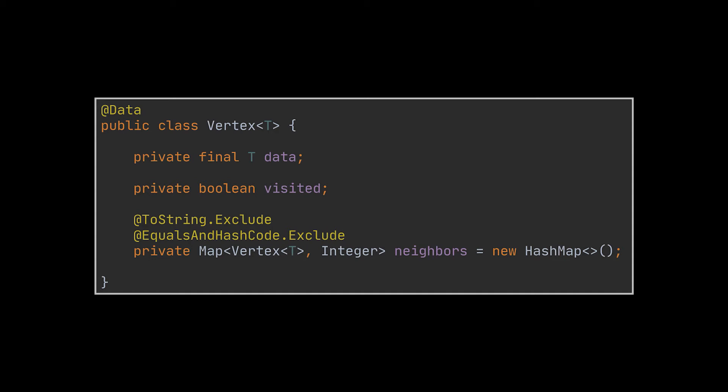Just like the normal vertex class we previously implemented on several occasions, we will have a data attribute, a visited attribute, and a map representing the neighbors of this vertex. The keys of the map will be the actual neighbor vertices of that node and the values are the weight or the flow capacity of the edge connecting the vertex with that neighbor.